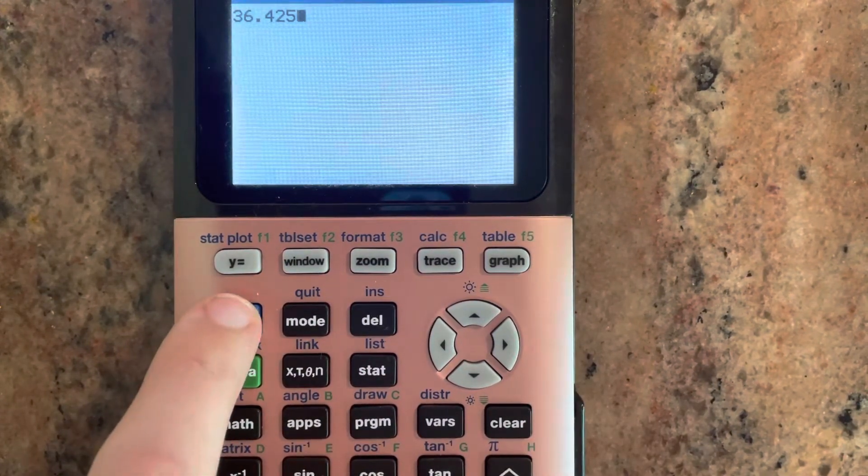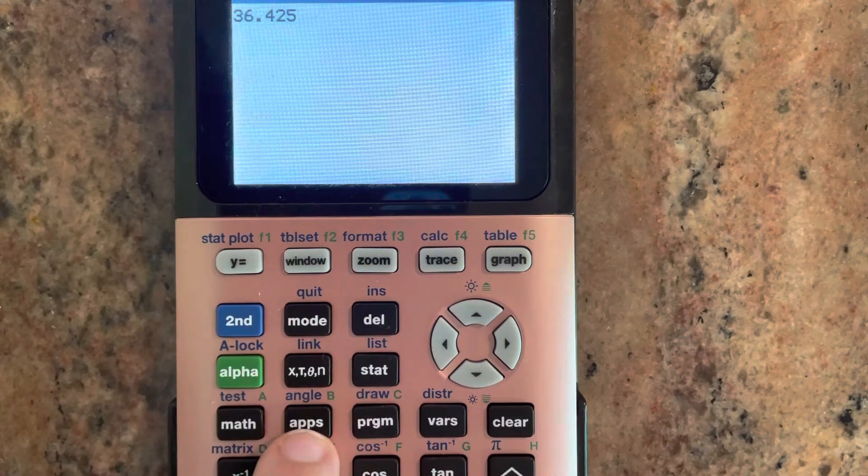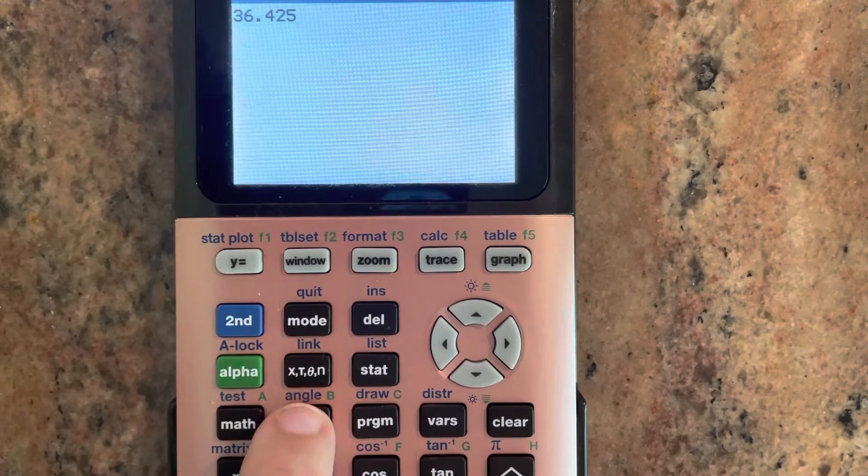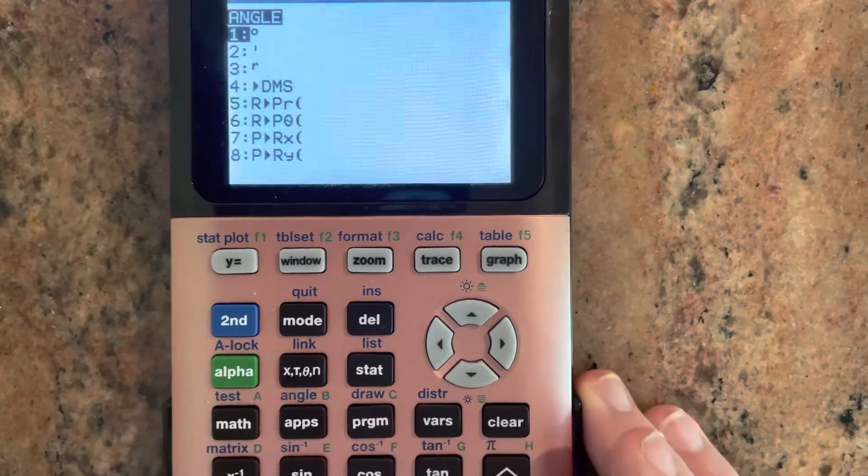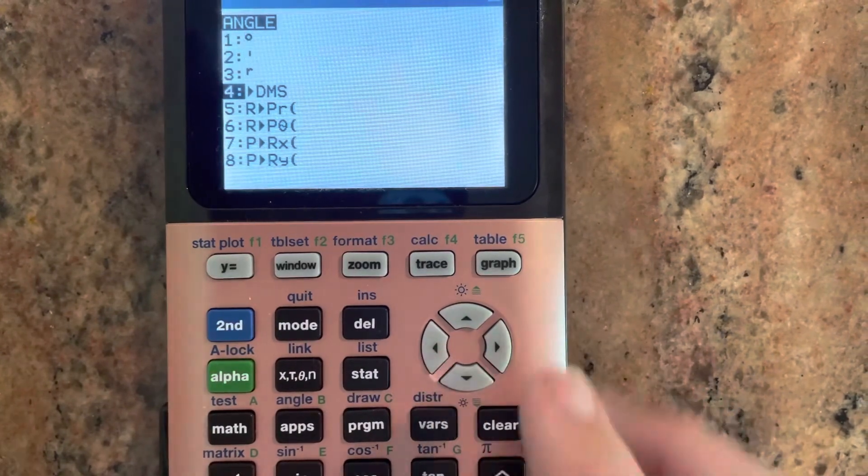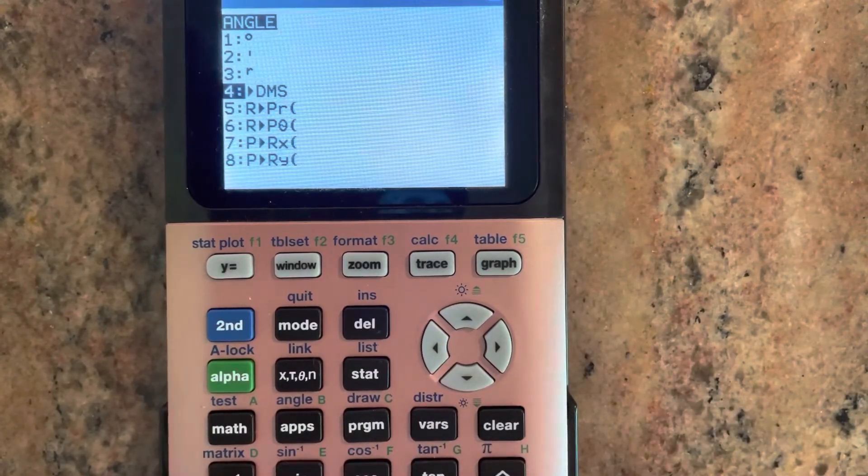You can see if you go second and then the apps button on your calculator, above it says angle. So you want that angle menu and then we want the fourth one down where it says arrow degrees, minutes, seconds.